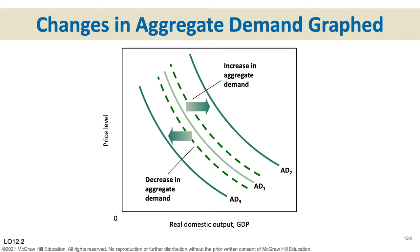Look at the lighter-colored aggregate demand curve AD1. Let's lower interest rates — how would that shift the aggregate demand curve? If interest rates go down, households will buy more houses, cars, and anything they'd need to borrow money to purchase. Businesses will buy more capital equipment too, since the investment decision requires the rate of return to exceed the interest rate. That initial increase in spending shifts AD to the right, and then the multiplier kicks in and shifts it even further. A shift from AD1 to AD2 represents that initial spending increase plus the multiplier effect.